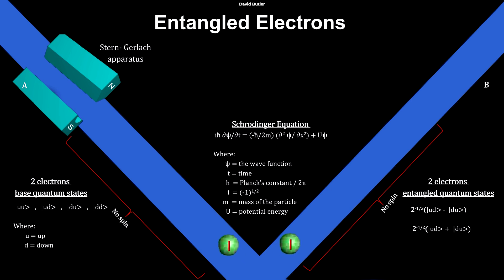Quantum entanglement also allows two particles to be spookily connected so that if you manipulate one, you automatically and immediately also manipulate the other, no matter how far apart they are, with the effect seemingly faster than the speed of light, which should be impossible.